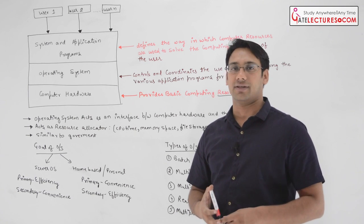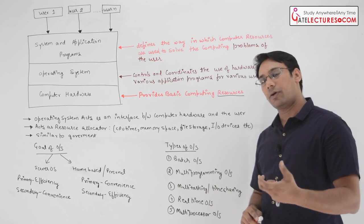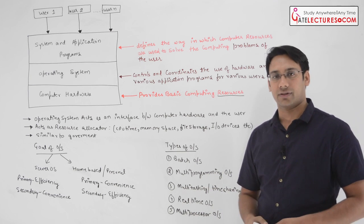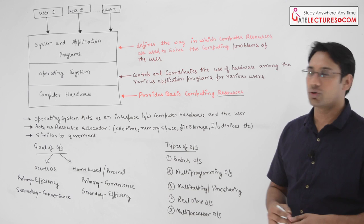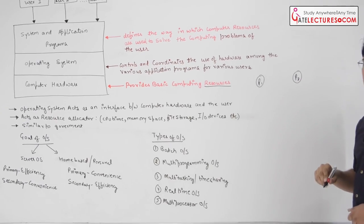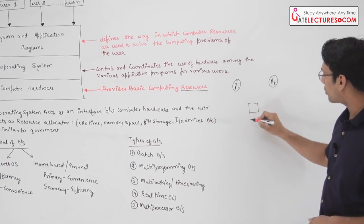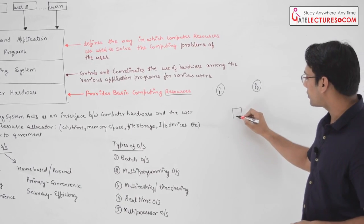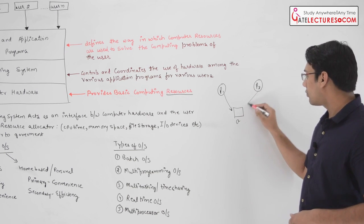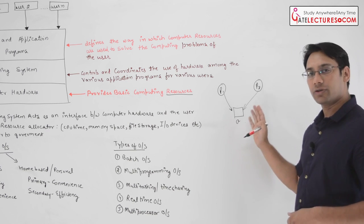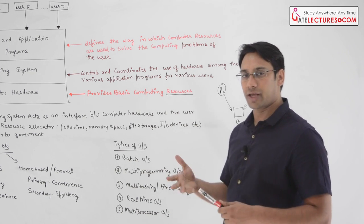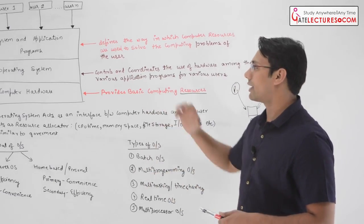Synchronization means, for example, suppose there are two processes P1 and P2. Both P1 and P2 want to work on a shared resource variable A. Both want to update the same data member. Because of this, we get a lot of issues related to synchronization, and the operating system is there to solve those issues.